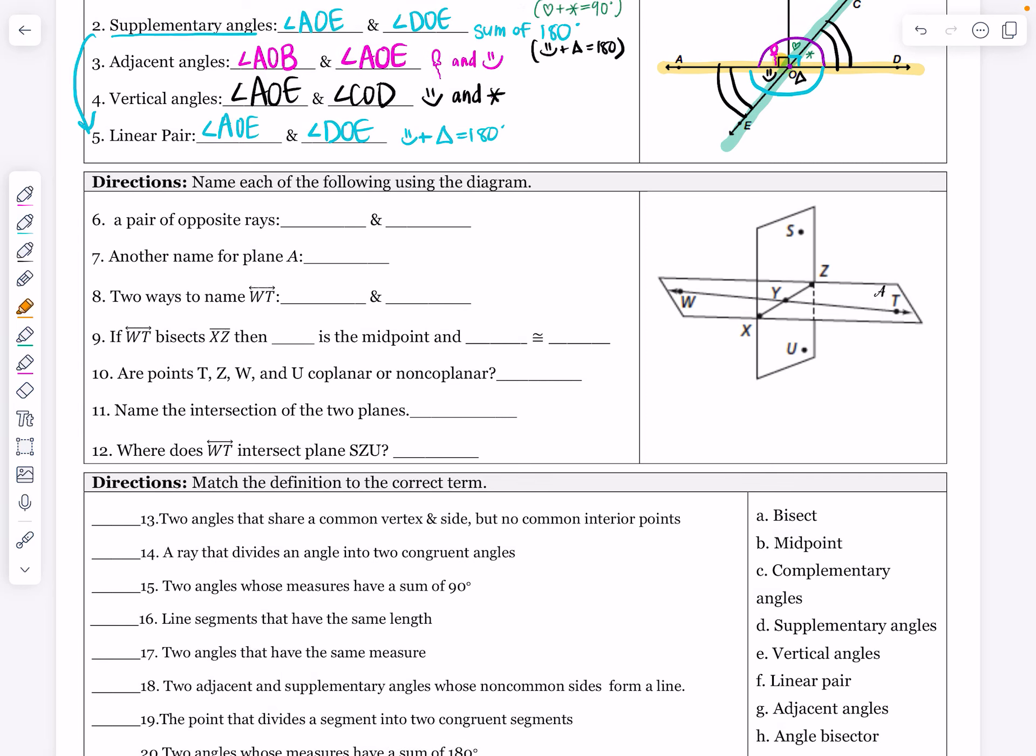Alright, the next set of directions say name each of the following using the diagram. The first set just asked me for a pair, so not all the pairs, just a pair of opposite rays.